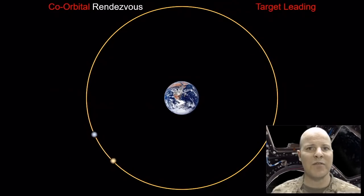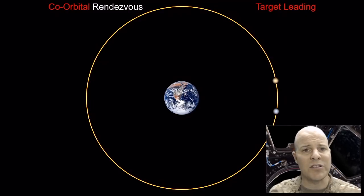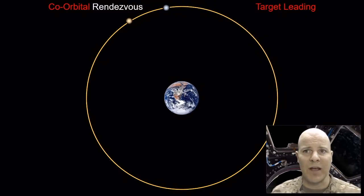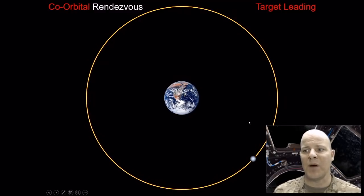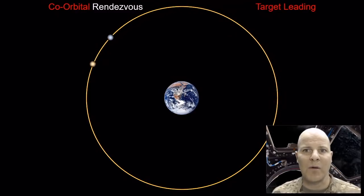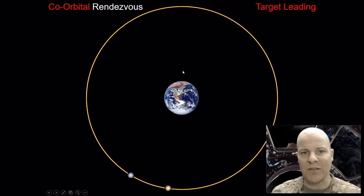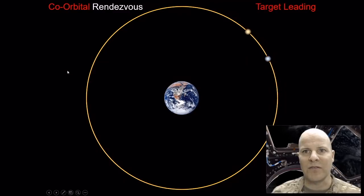The next rendezvous we're going to talk about is co-orbital rendezvous. Before we had two orbits; now we only have one orbit. We have two spacecraft along the same orbit, but the interceptor satellite is behind the target — we call this a target-leading scenario. We'll also talk about the target-trailing scenario. This is one of the really cool, counterintuitive aspects of spaceflight.